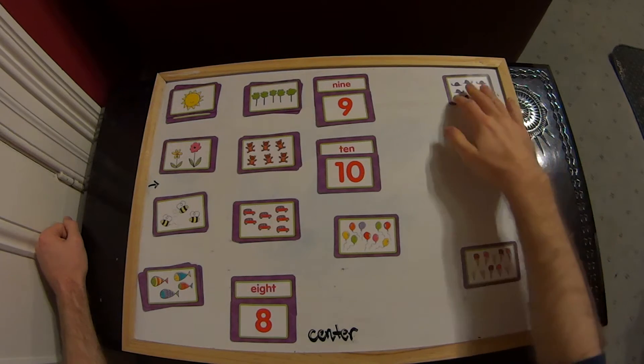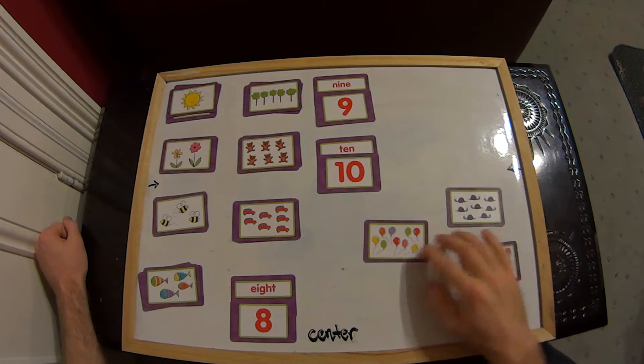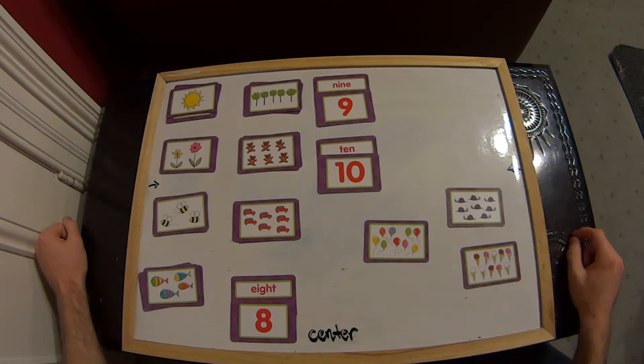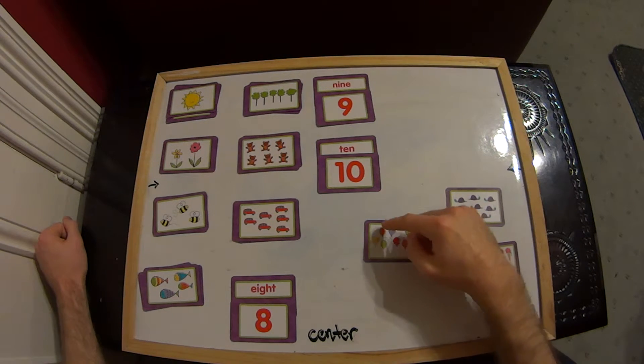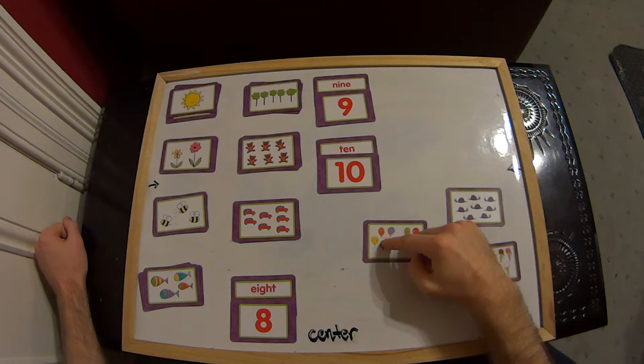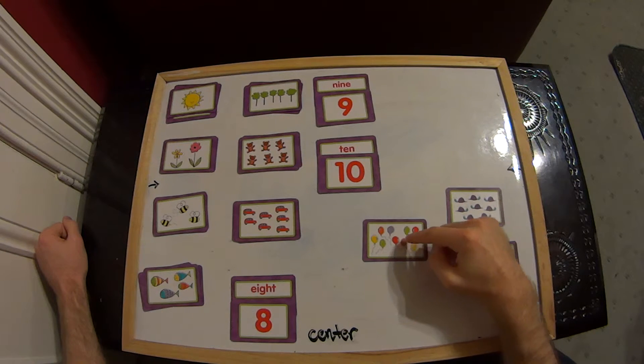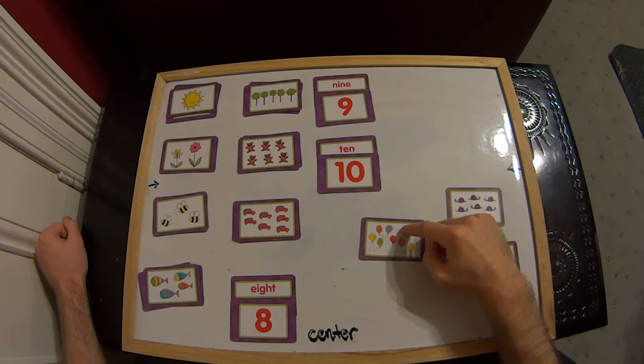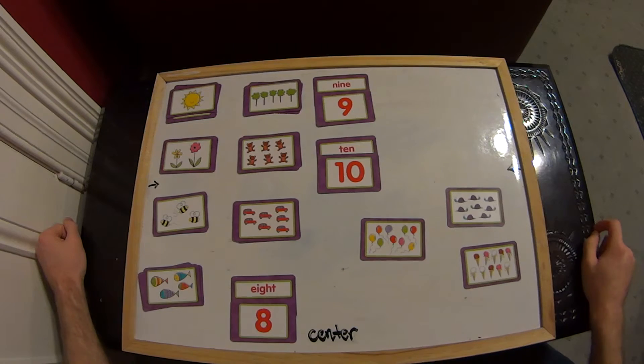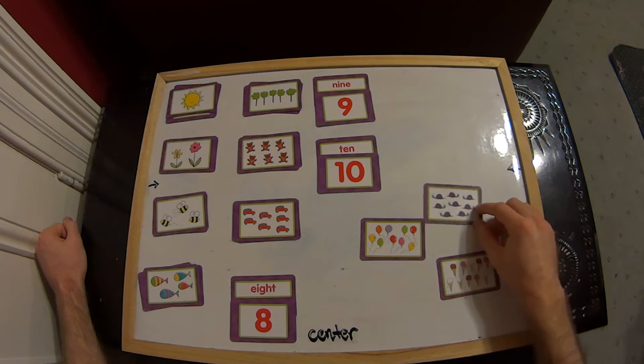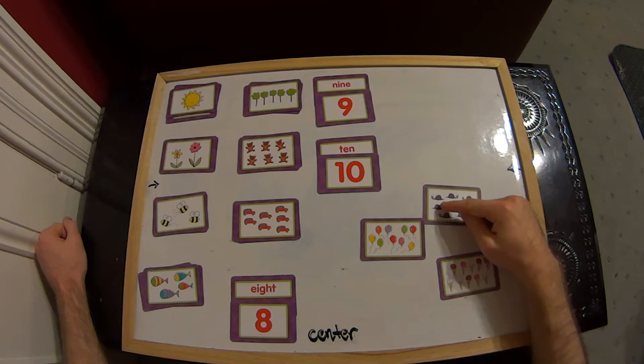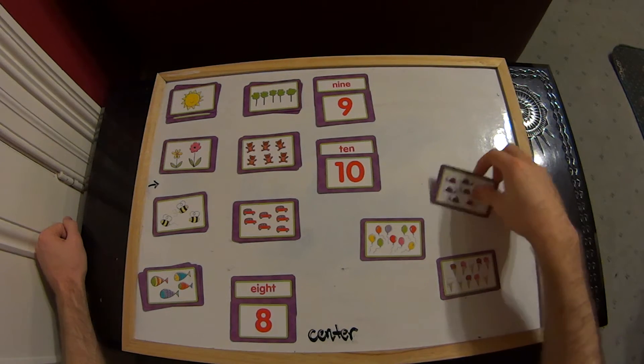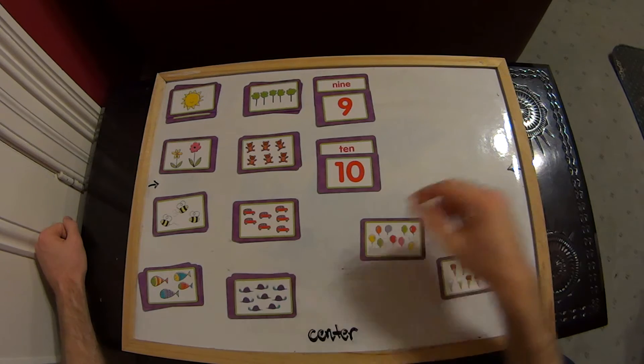All right. Now we want to find 8. We've just got 3 left. Let's have a look at the balloons. Maybe there's 8 balloons. 1, 2, 3, 4, 5, 6, 7, 8, 9. Oh, no. 9 balloons. Well, let's try the snails. 1, 2, 3, 4, 5, 6, 7, 8. There we go. 8 snails.